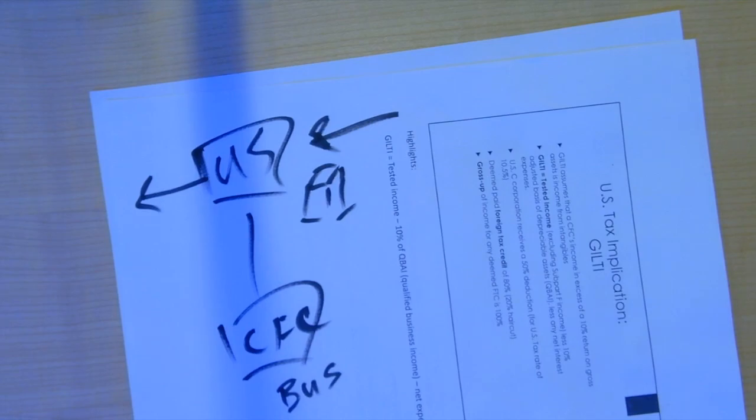So when Apple files its Form 1120, the corporate income tax return, it will calculate an FDII deduction that relates to its own sales, and it will have a GILTI inclusion. Then it will take the 50% deduction against that GILTI and end up with a taxable income which reflects both the FDII deduction and the GILTI.